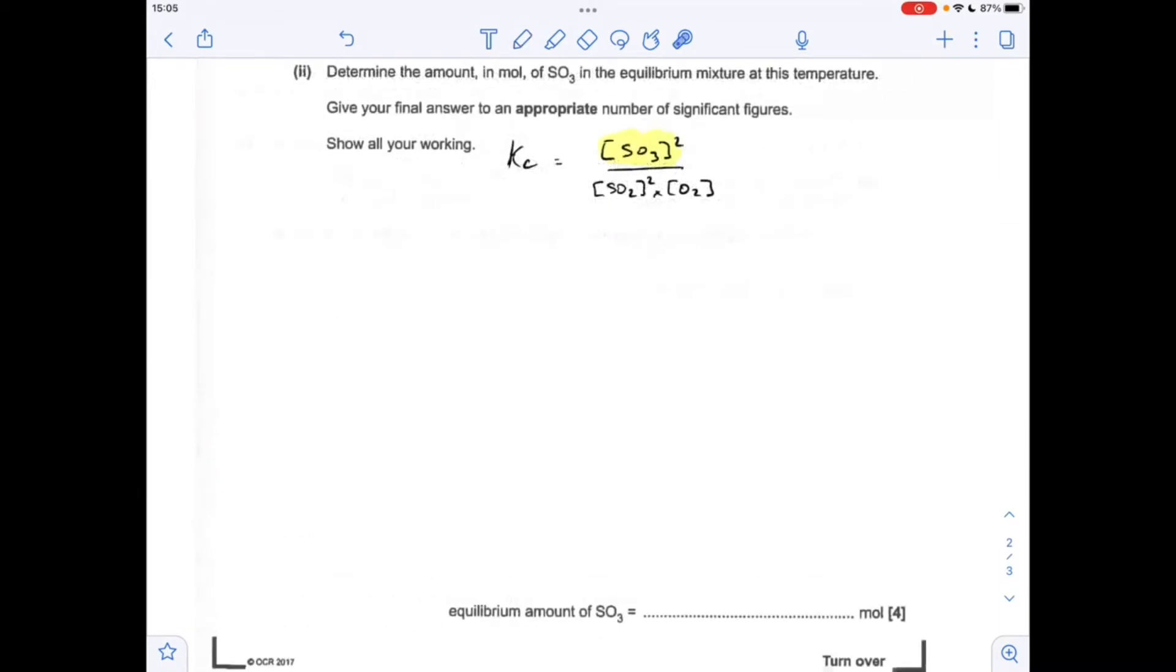Moving on to the final part, we've got to calculate the amount in moles of SO3 in the equilibrium mixture. We can use the Kc expression to calculate the concentration of SO3, and then if we factor in the volume, we can turn that into moles.